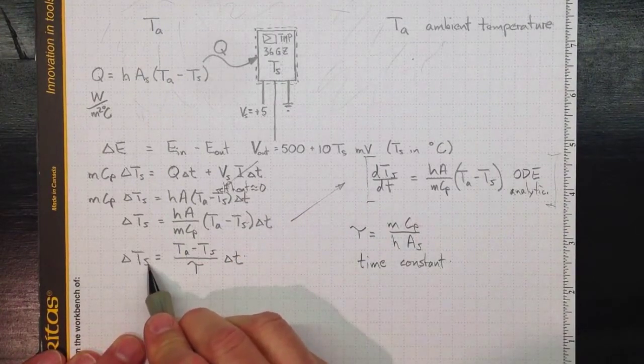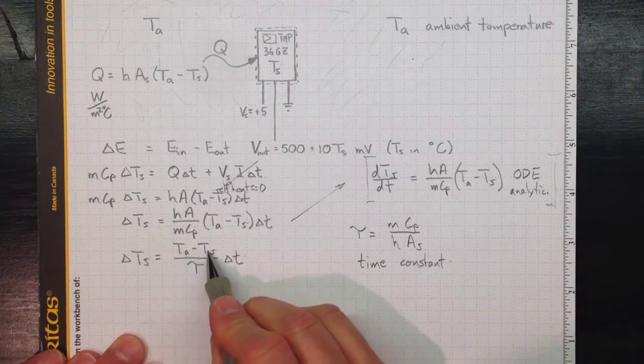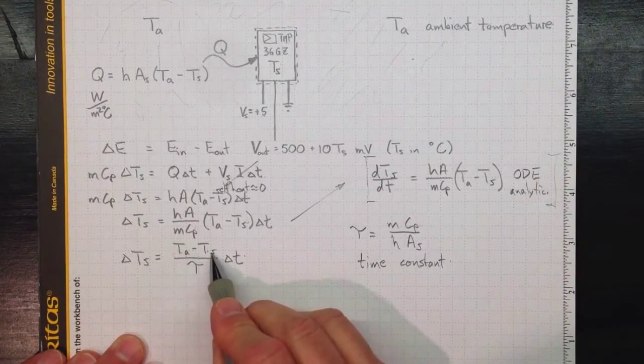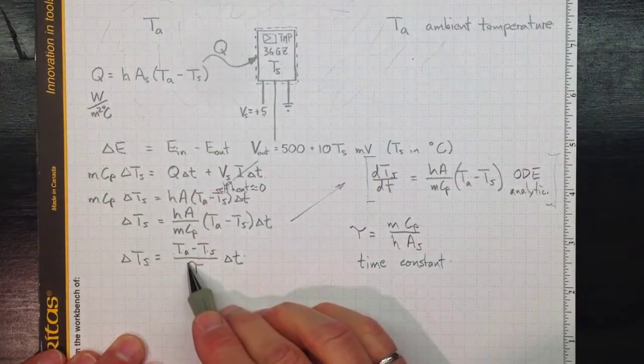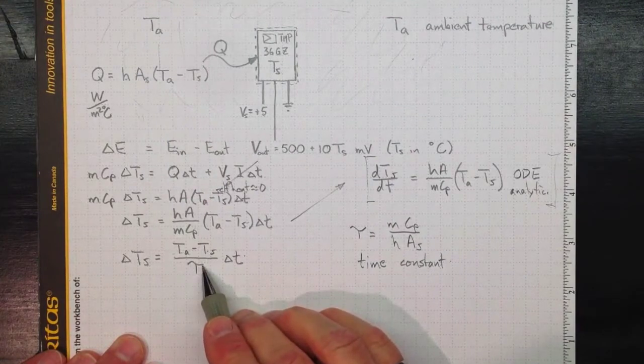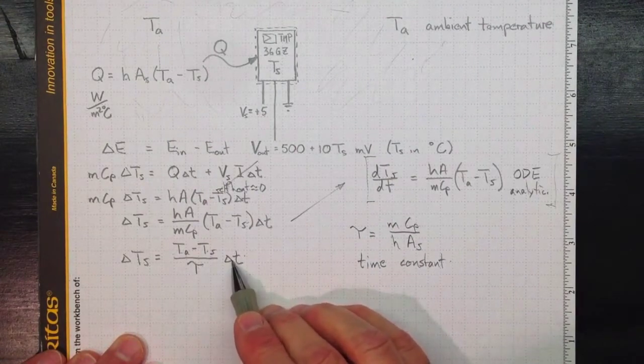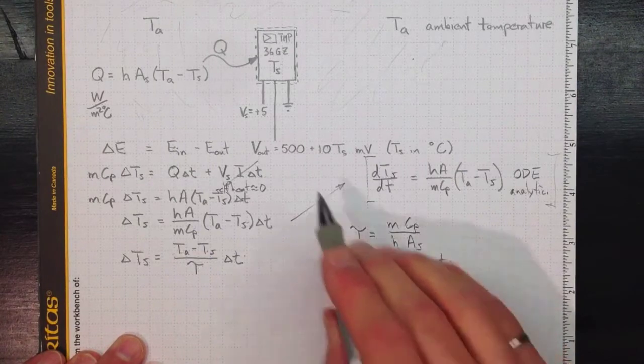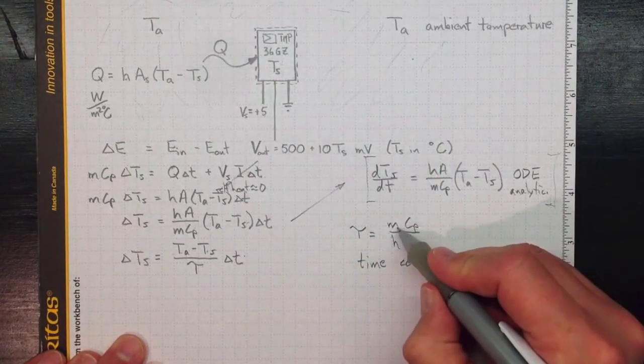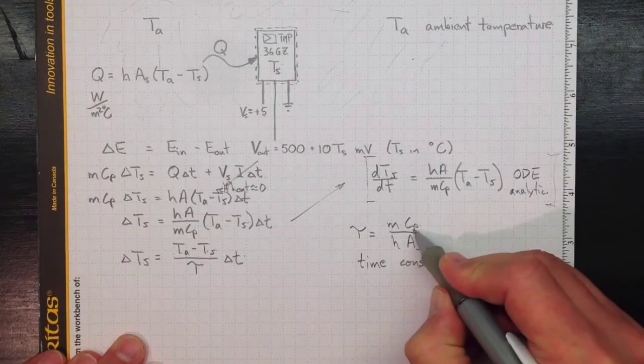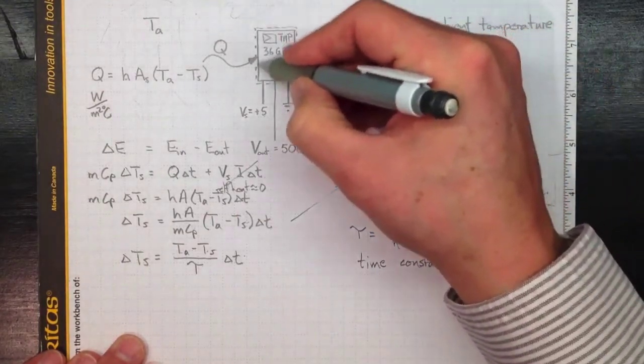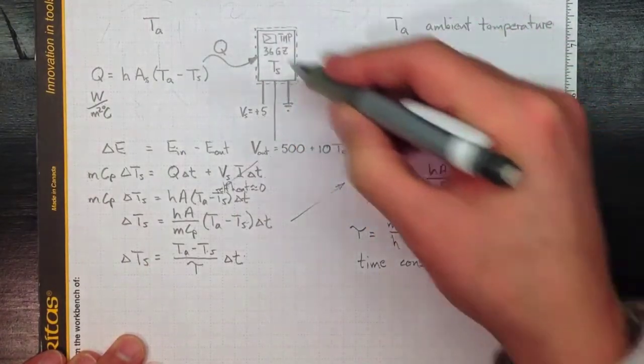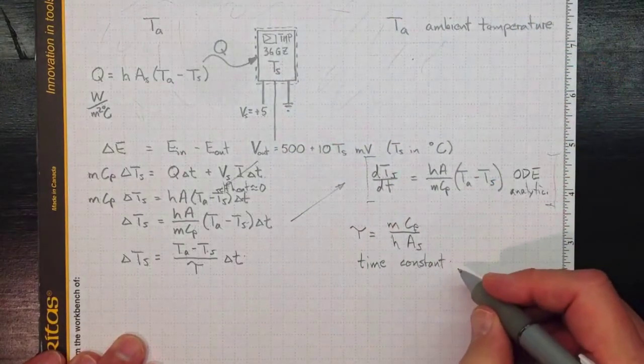So the rate at which the temperature is going to change depends on how different the sensor is from the ambient, the time constant TAU, and how long we watch for. This time constant TAU has things that are all about the nature of the sensor. How big is it? What's its mass? What's its specific heat? What's it made out of? And how much energy does it take to warm that kind of stuff up?